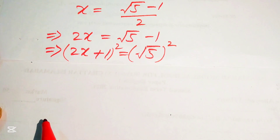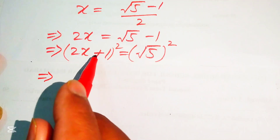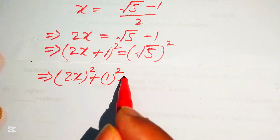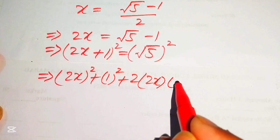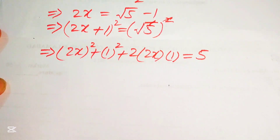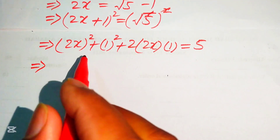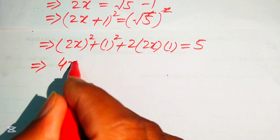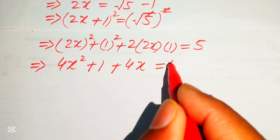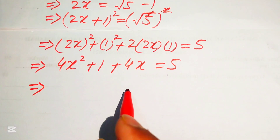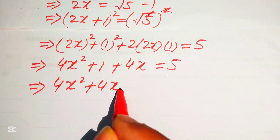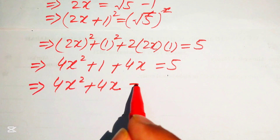Expanding the left side using the square formula: (2x)² + 1² + 2(2x)(1) = 5. This gives 4x² + 4x + 1 = 5.